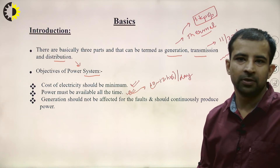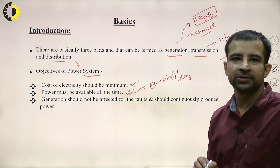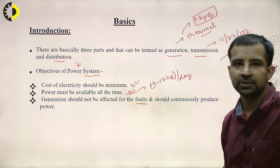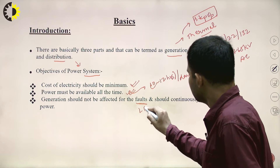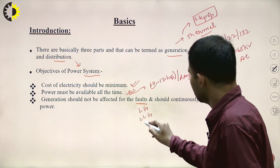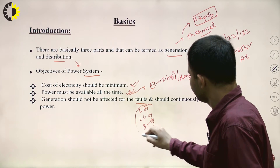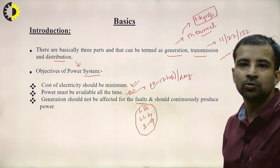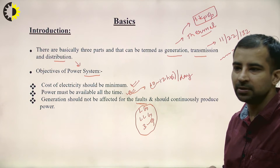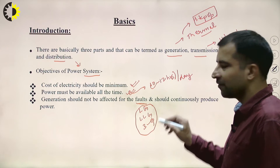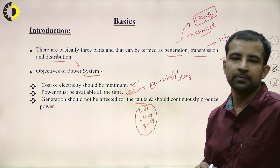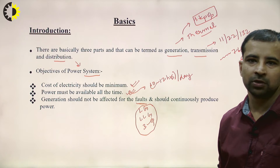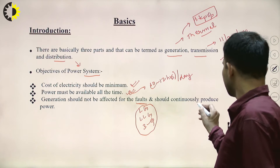Third, generation should not be affected by faults and should continuously produce power. There are different types of faults in power systems — LG fault, double line-to-ground fault, and three-phase fault. Even if a fault occurs in the transmission line, the power supply must remain continuous, as consumers are not concerned with where the fault occurred.